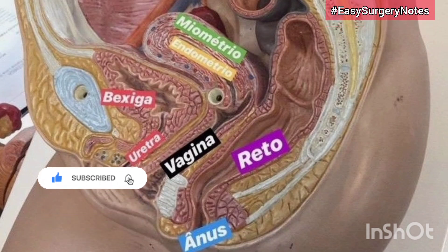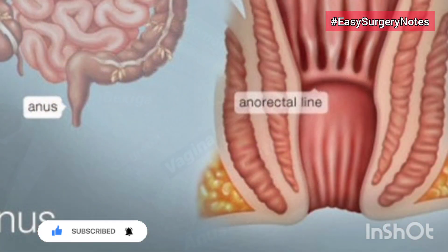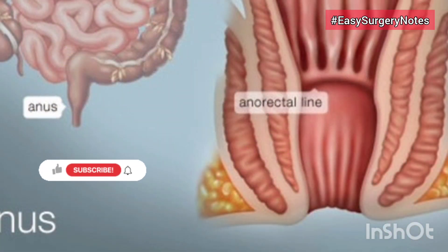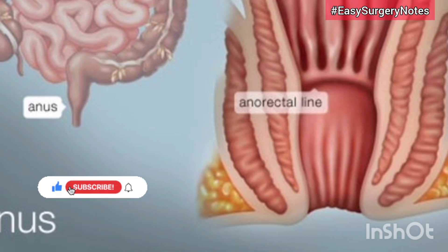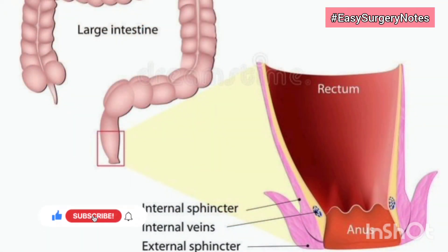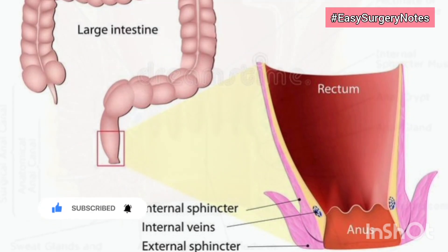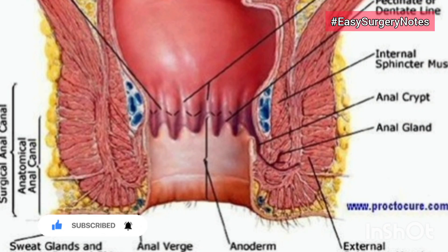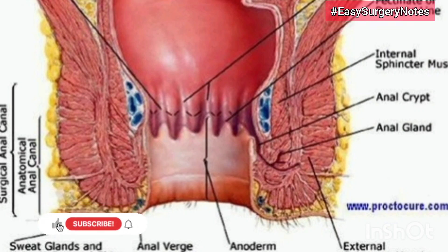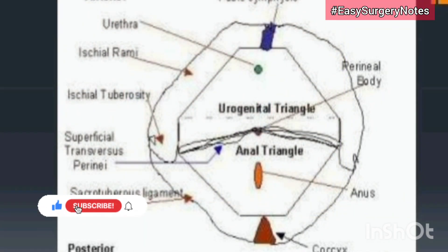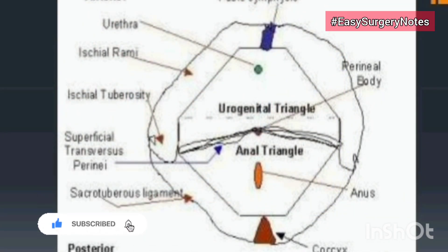Blood supply of the anal canal — arterial supply: above the pectinate line is supplied by the superior rectal artery; below the pectinate line by the inferior rectal artery. Venous drainage: (1) internal rectal venous plexus (hemorrhoidal plexus) lies in the submucosa of the anal canal, drains mainly into the superior rectal vein but communicates freely with the external plexus and thus with the middle and inferior rectal veins. The internal plexus is therefore an important site of communication between portal and systemic veins.